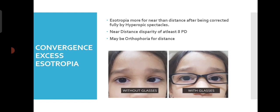Coming to Convergence Excess Esotropia — this is an important type. There is more Esotropia for near than for distance even after being fully corrected by hyperopic spectacles. Even after correction with plus glasses, there is residual Esotropia for near, and there is a near-distance disparity of at least 8 prism diopters. The child may be orthophoric for distance but will have Esotropia while reading even after wearing glasses.